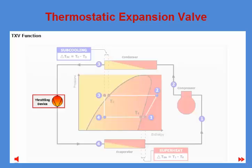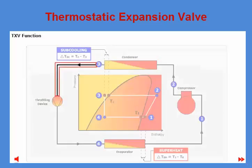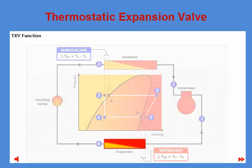For the expansion valve to operate correctly, it's important to always have 100% liquid in its inlet connection. To guarantee this, it's important to maintain a certain minimum subcooling in the liquid line at point three. If this is not possible, flash gas may develop in the inlet of the throttling device, leading to starvation of the evaporator because of a drop in the injected amount of liquid.